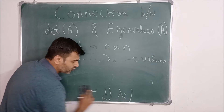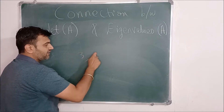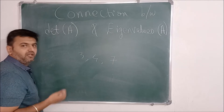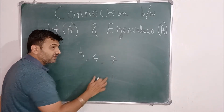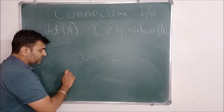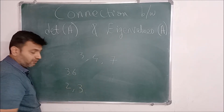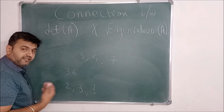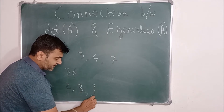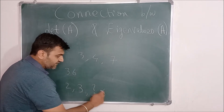Many times, suppose you don't know the matrix but you know that the eigenvalues are 3, 4, and 7. If I ask you whether the matrix is invertible, the answer is yes — because all the eigenvalues are non-zero. Another question: suppose you have a matrix whose determinant is 36 and the eigenvalues are 2 and 3. What is the third eigenvalue? You can use the relation: 36 equals 2 times 3 times x, so 36 equals 6x, giving x equals 6. So the third eigenvalue is 6.